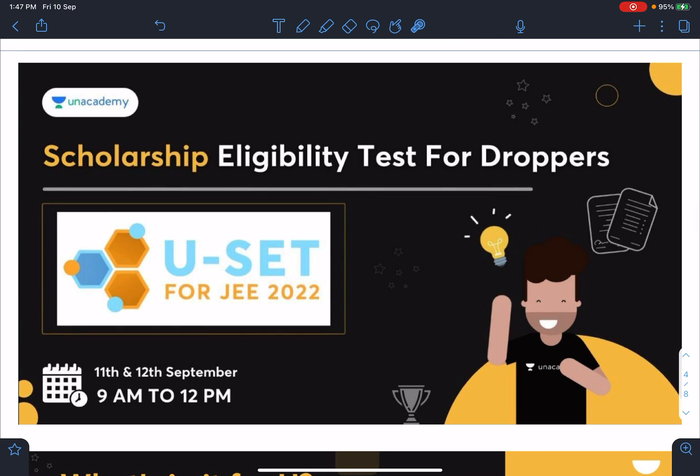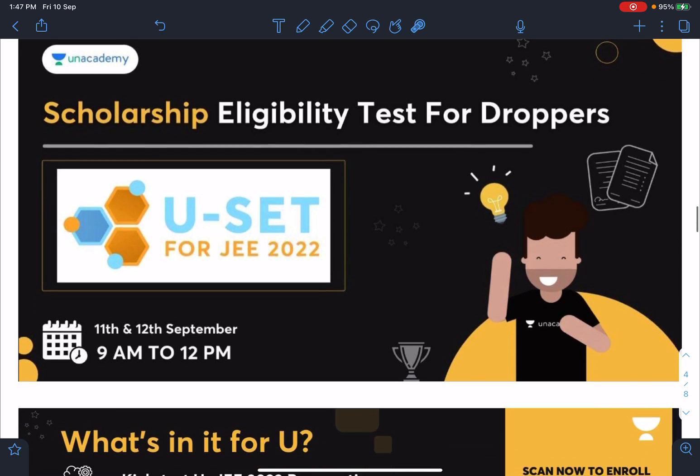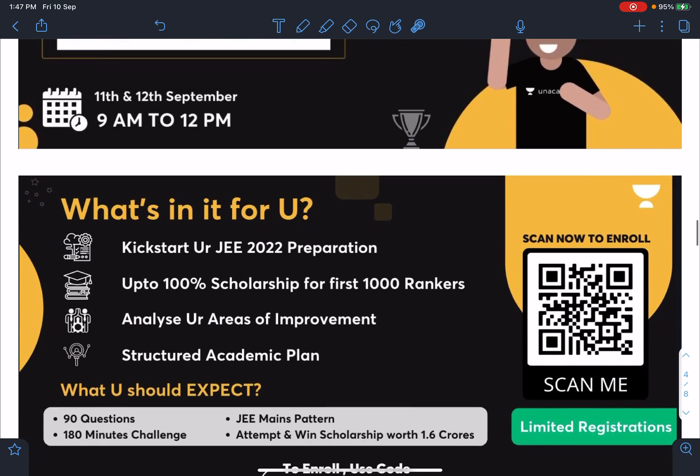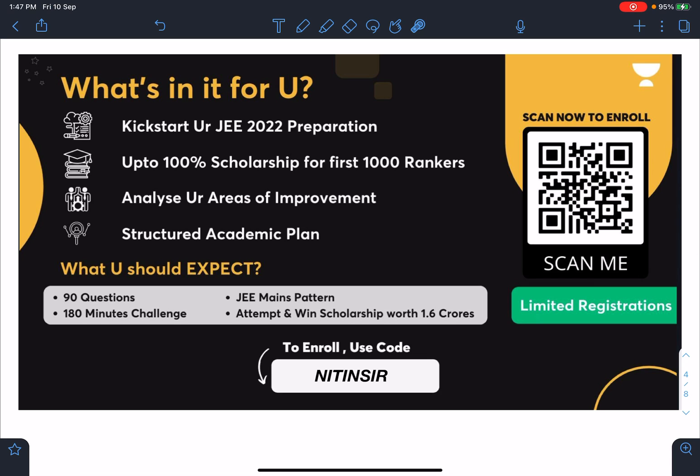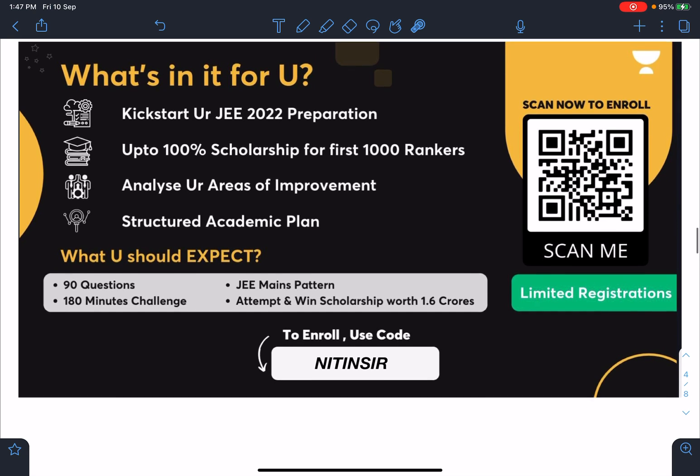I have given this information especially for the droppers of 2022 JEE. So U-SET test is there for droppers. It's on 11th and 12th September. Timings are given 9 a.m. to 12 p.m. And you can scan this code in order to enroll. And you can use my code Nitin Sir anywhere on this platform in order to access the free lectures or test papers or quizzes.